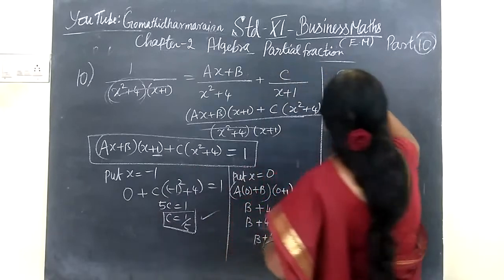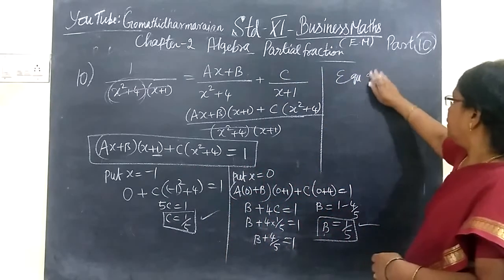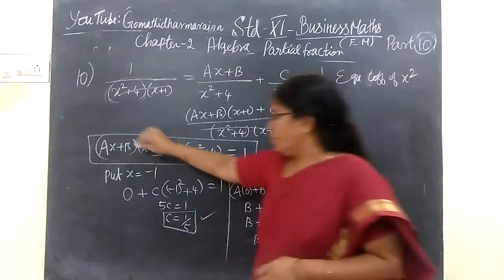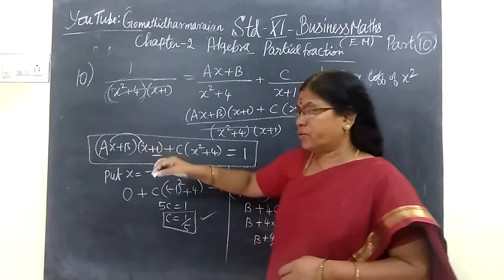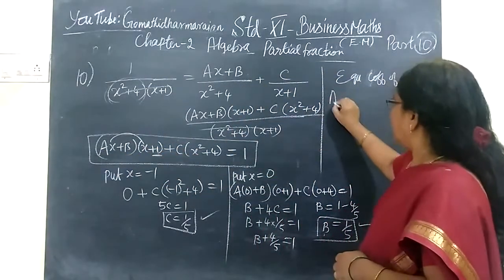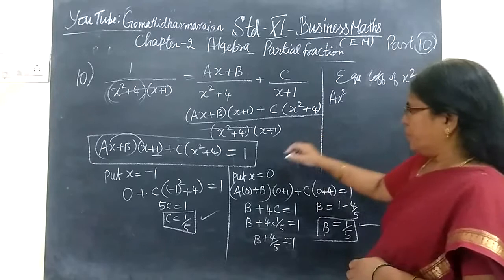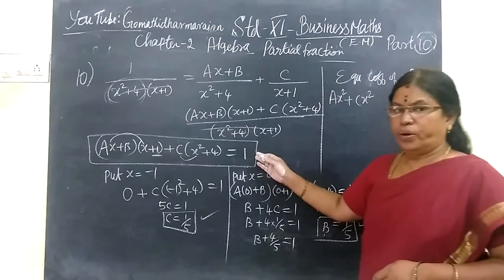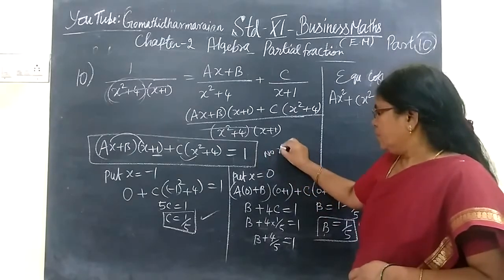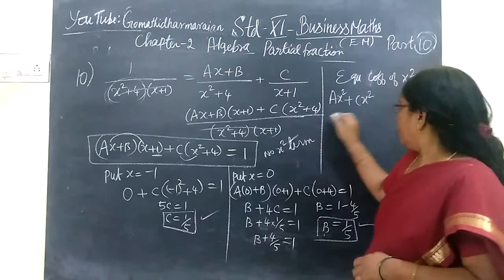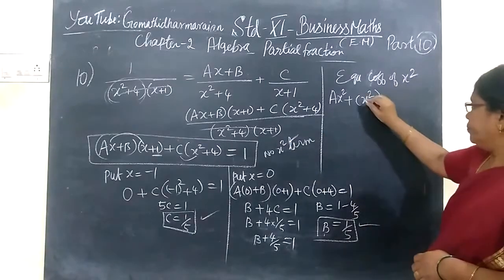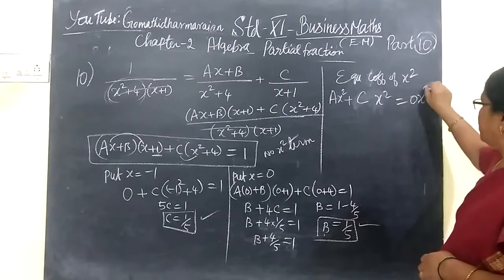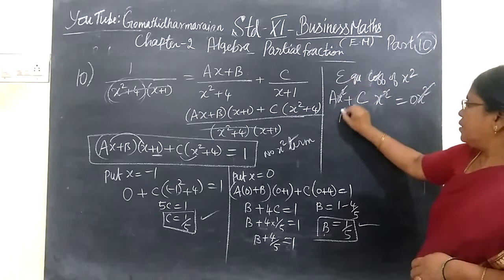Next one is equating coefficient of x². x² is equal to... Ax² because last class we got the same type. Then this also is considered, so Cx². There is no x² term on the right side, therefore you write 0. So x² term cancel.